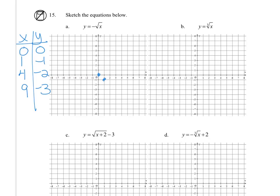0, 0 is our endpoint, 1, negative 1, 4, negative 2, and we get our graph this way. It's supposed to stop at that endpoint.